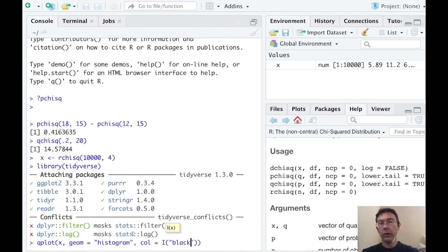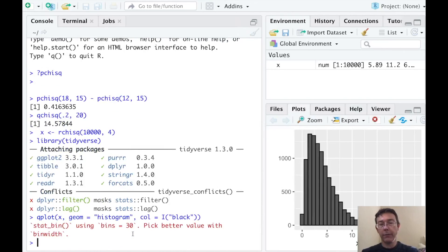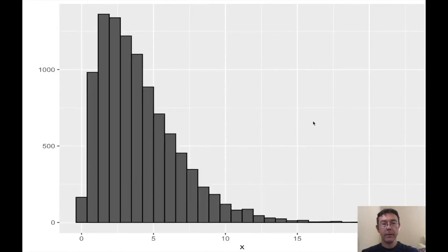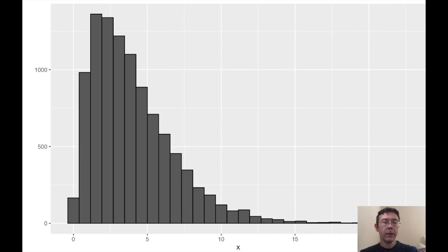So how about col equals I parentheses, quote, black. This should give us a reasonable looking plot right off the bat. There it is. This clearly has the general shape of the chi-square distributions that we saw earlier in this talk.